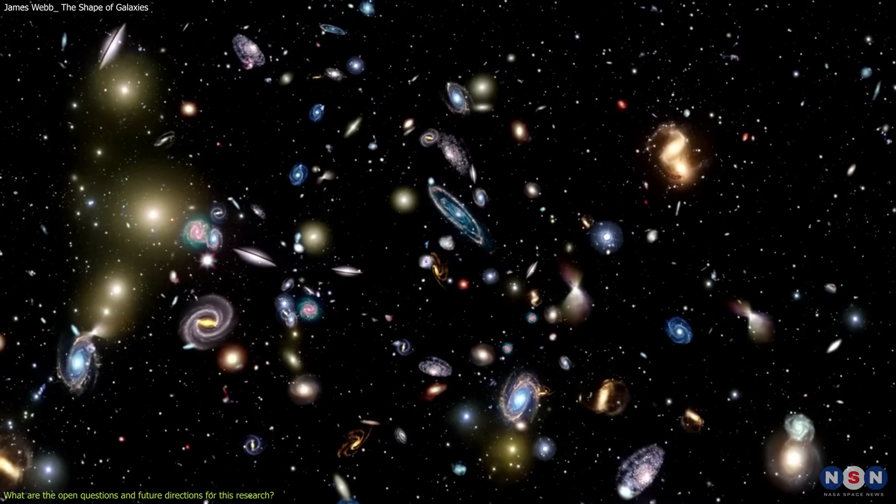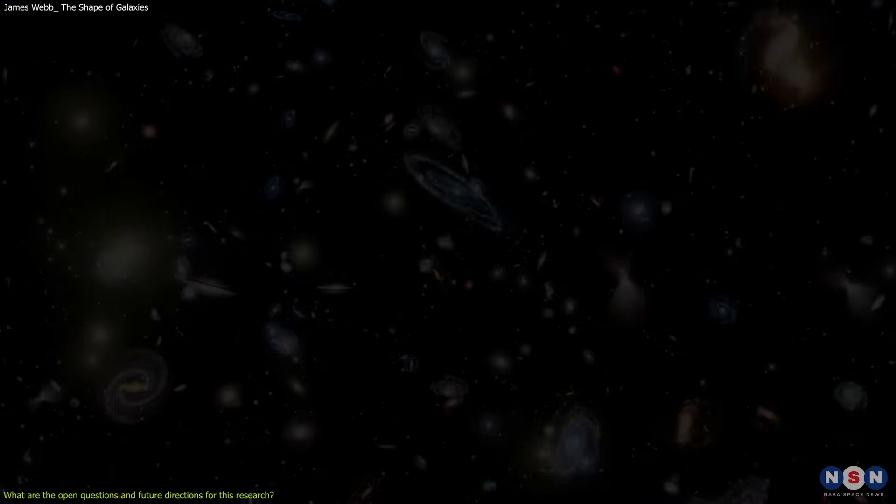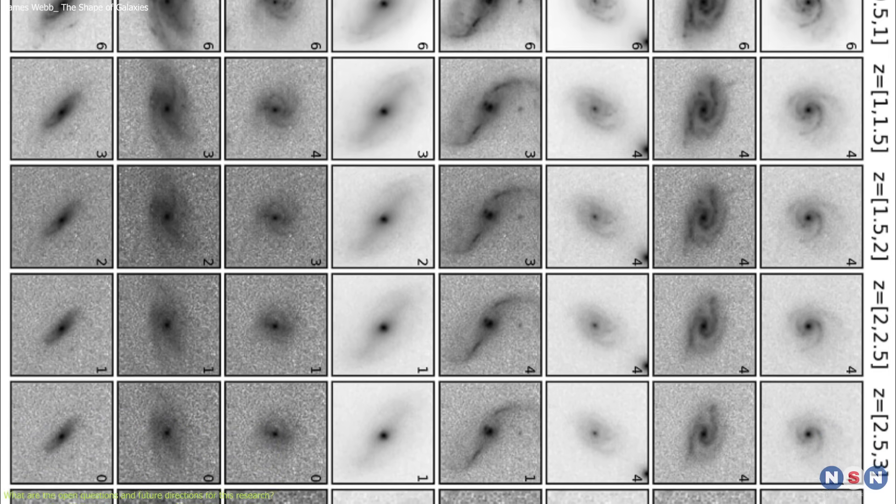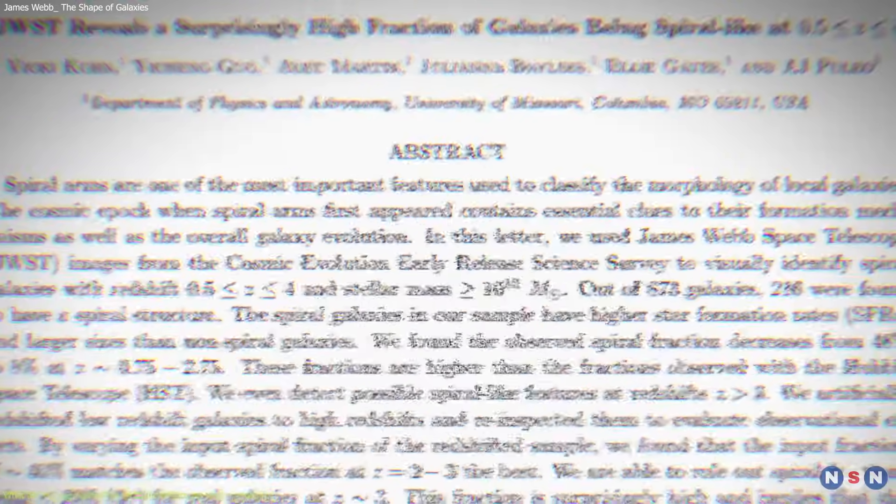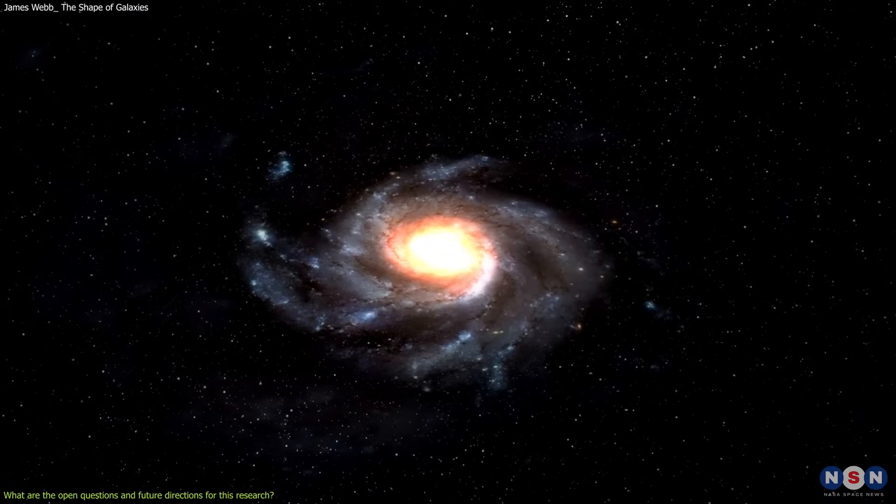Different classifiers may have different opinions or criteria for classifying the galaxies and may miss or misidentify some features. This means that the study may not be consistent or accurate in its classification and may be affected by human errors or biases.